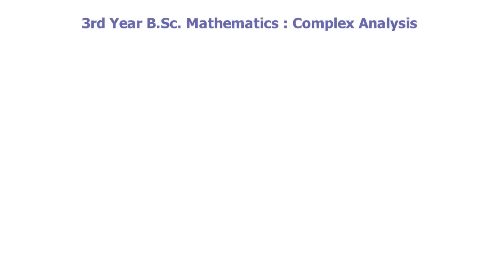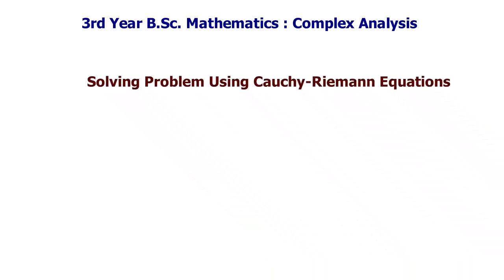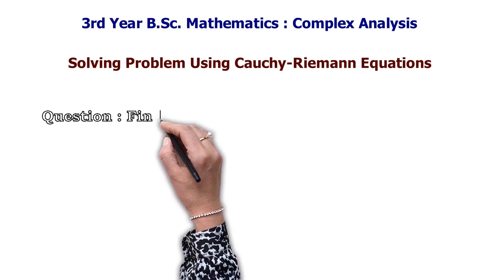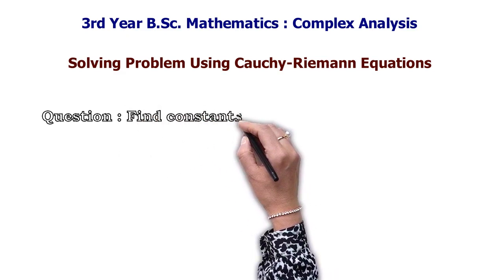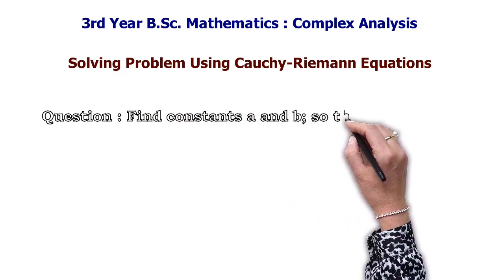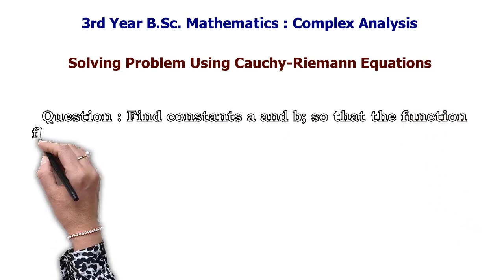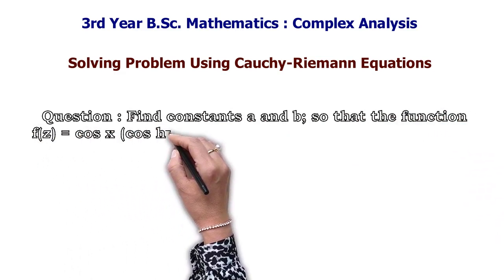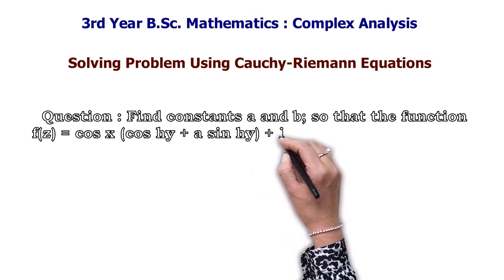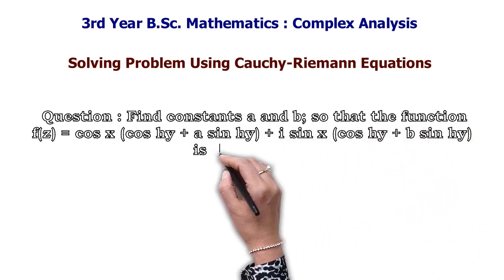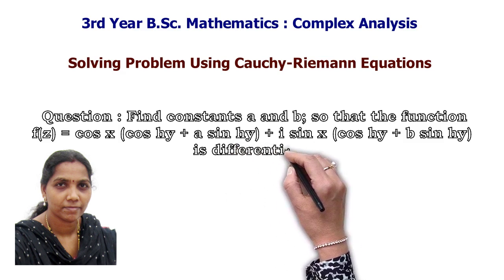Hi friends. In this session I am going to explain how to find the constants using Cauchy-Riemann equations. The question is: find the constants a and b so that the function f(z) = cos(x)(cosh(y) + a·sinh(y)) + i·sin(x)(cosh(y) + b·sinh(y)) is differentiable.